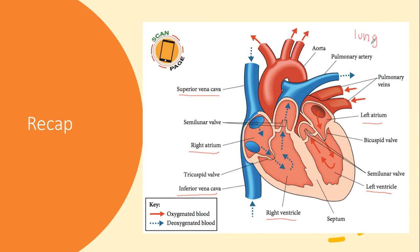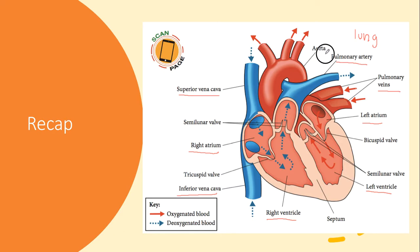The deoxygenated blood is then transported to the lungs for gaseous exchange to occur through the pulmonary artery. At the lungs, when the blood receives oxygen, it is transported back to the heart through the pulmonary vein, and then the heart pumps the oxygenated blood to the rest of the body through the main artery, which we call the aorta.